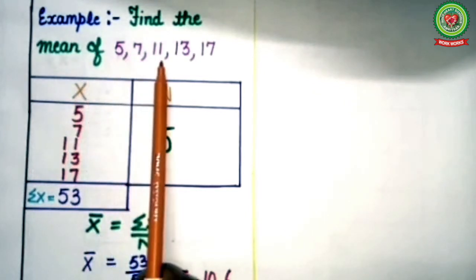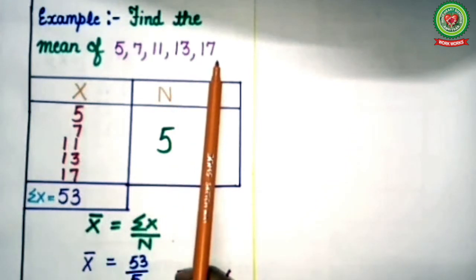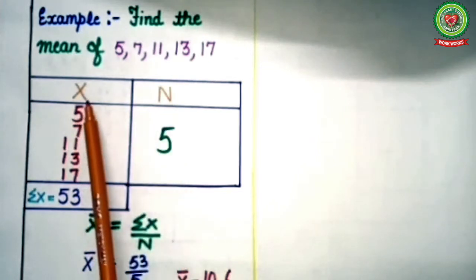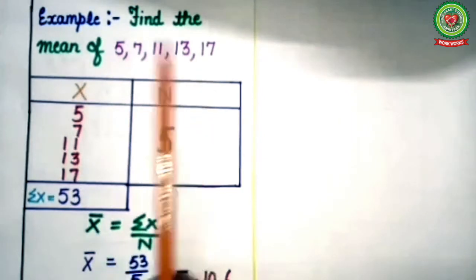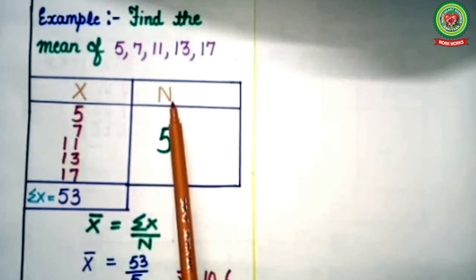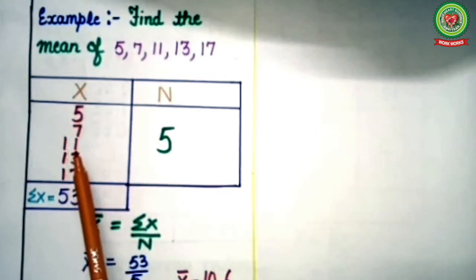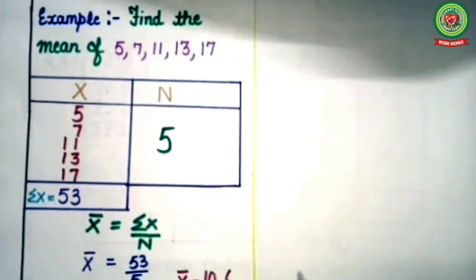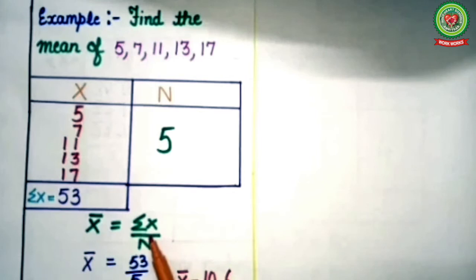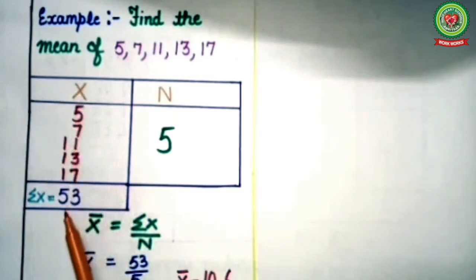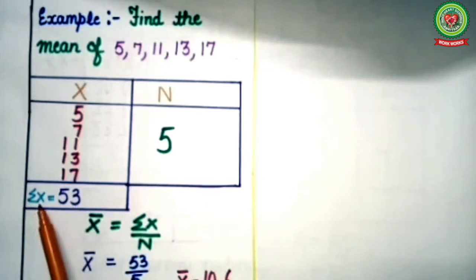Let's start with the examples. Find the mean of 5, 7, 11, 13, 17. We will draw two columns — in the first column write x, which means observations, and in the second column write n for number of observations. Write down the observations: 5, 7, 11, 13, 17. The formula to find mean is x̄ = Σx upon n. Σx is the sum of observations. Add all these observations and you will get 53, so the value of Σx is 53.